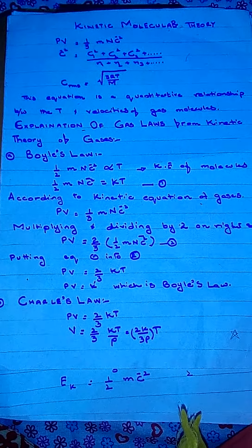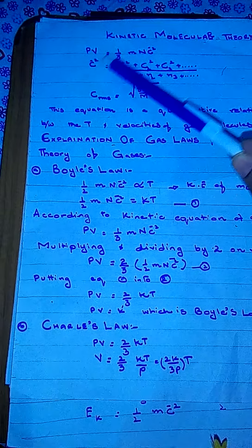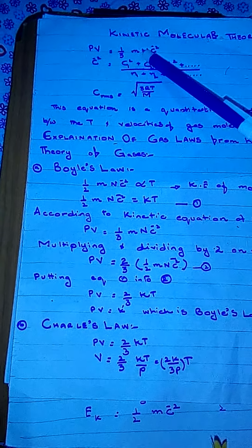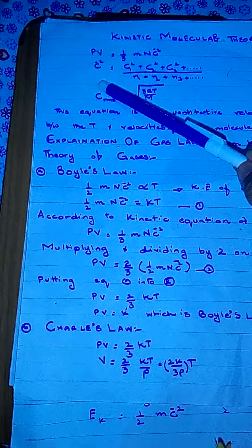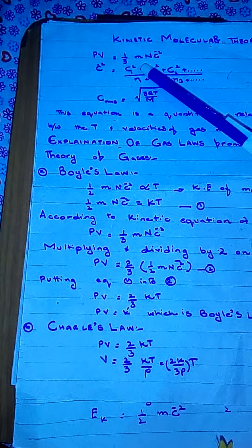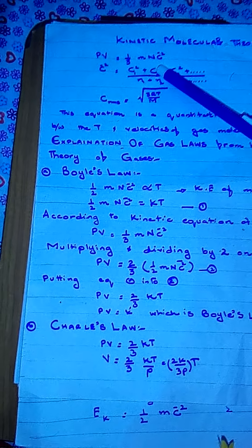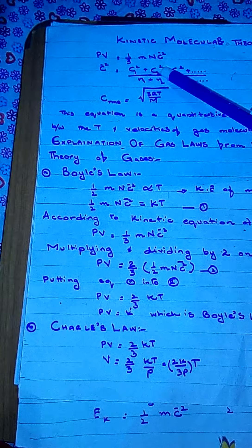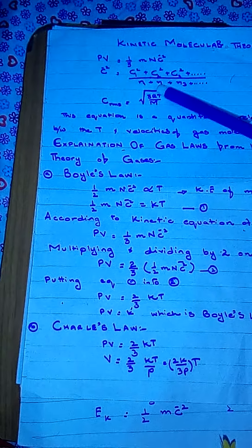The key equation is PV = 1/3 MNC̄², which is the mathematical representation of the kinetic molecular theory of gases. Here P is pressure, V is volume, M is the mass of one molecule of gas, and capital N is the number of molecules of gas in the vessel.